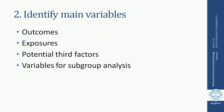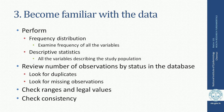The second step is to identify the main variables: what are the outcomes, what are the exposures, what are the potential confounding factors, and what variables are needed for subgroup analysis. To become familiar and intimate with the data, you need to perform a frequency distribution of all the variables and look at the frequency of all variables in your dataset.